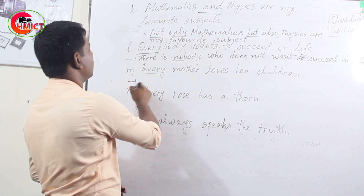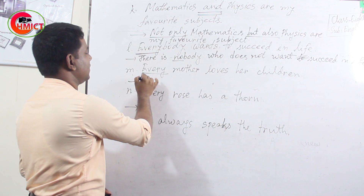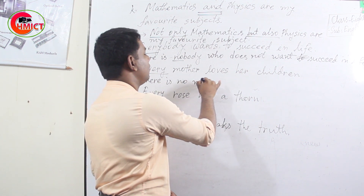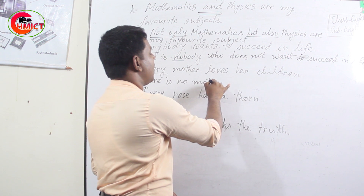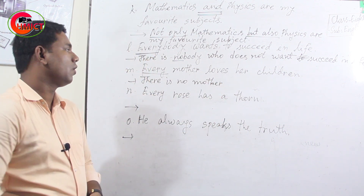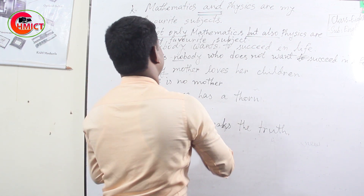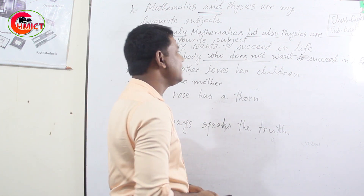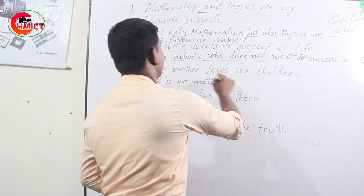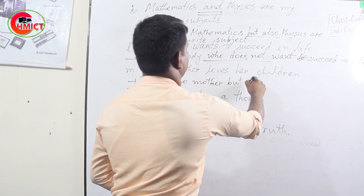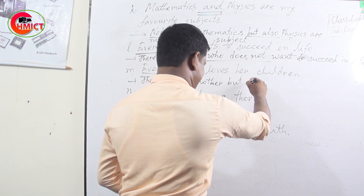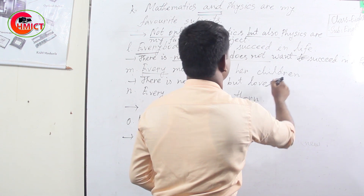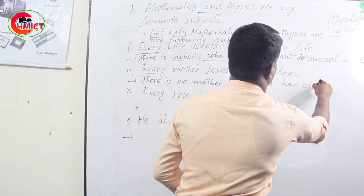For sentence M: 'Every mother loves her children.' There is an alternative rule for 'every'. You can use 'but' at the place of 'who does not'. If you use 'but', you can keep the S/ES form of the verb. So: 'There is no mother but loves her children.'